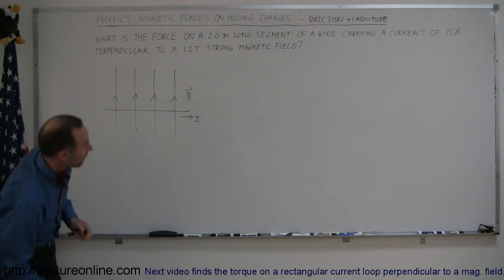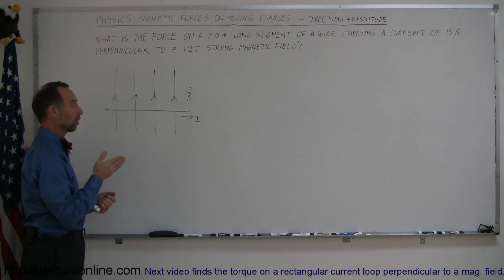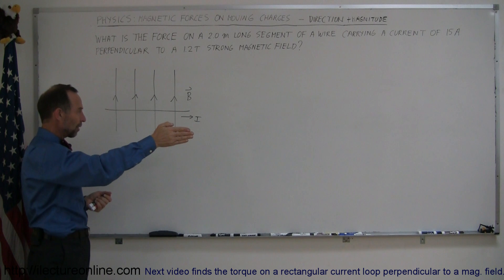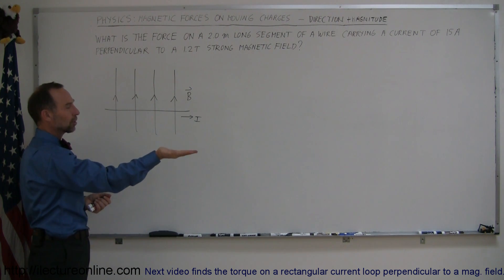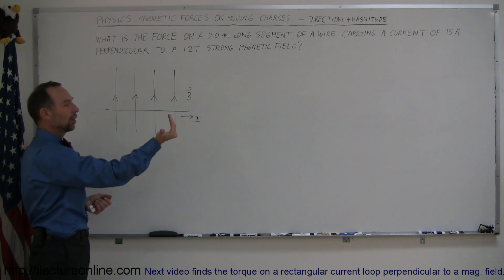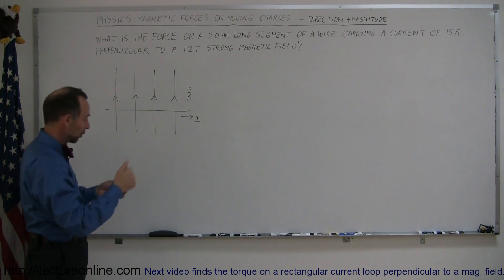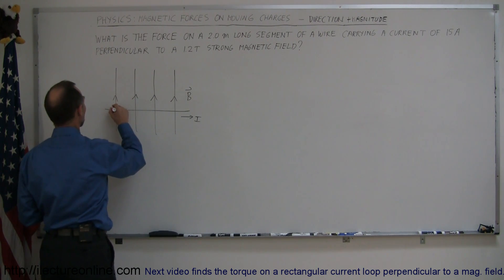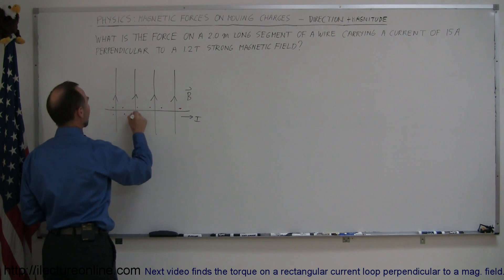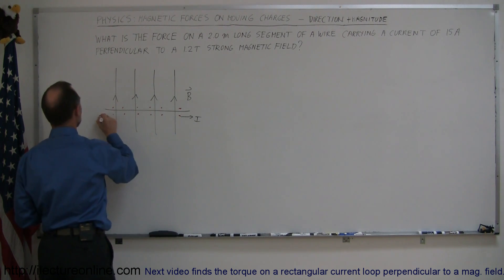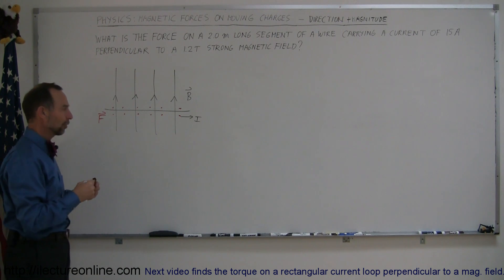The direction of force would be as follows. You take your right hand, assuming that these are positive charges — you point your fingers in the direction of the current, the direction of the velocity of the charges. Then you move your hand so you can curl your fingers in the direction of the magnetic field, which means that the forces on the charges in the wire will be out of the board. So the forces are directed outward from the board.